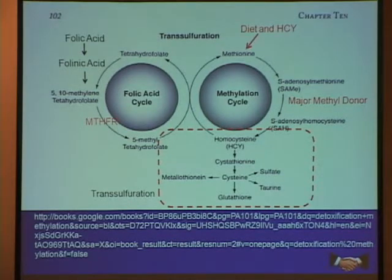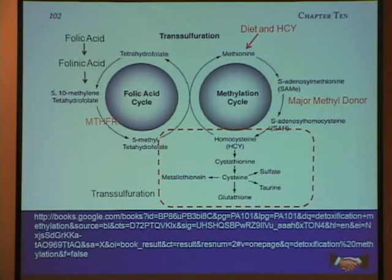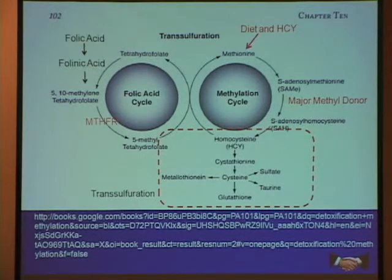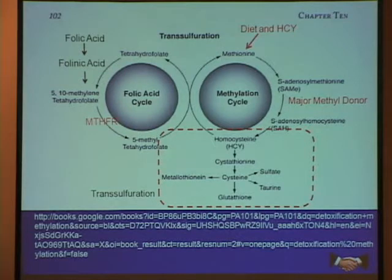The biggie here is the methylation cycle. A methyl group is a CH3 group — it's called single carbon chemistry. Methyl groups are very, very important. Homocysteine at the bottom of that cycle becomes methylated, or it receives a methyl from a methyl donor, and becomes methionine, which is an amino acid we can also acquire from our diet. That's converted into S-adenosylmethionine, or what we call SAM, which becomes the primary methyl donor in the body for a host of biological reactions, including DNA production.